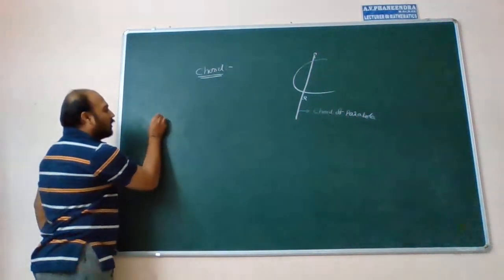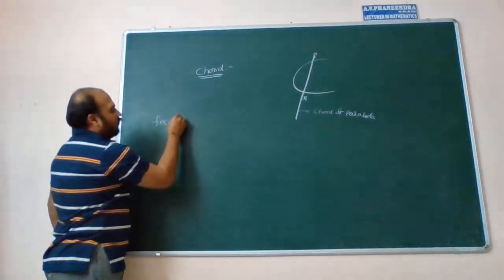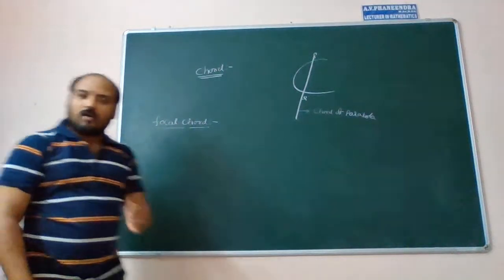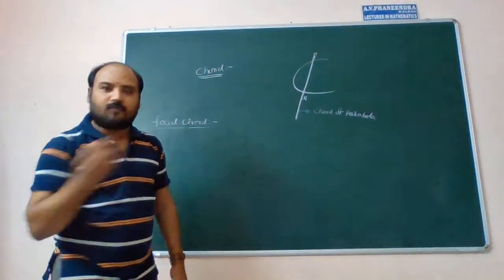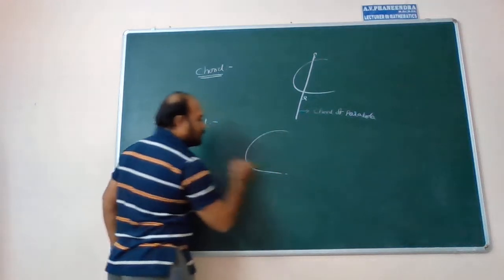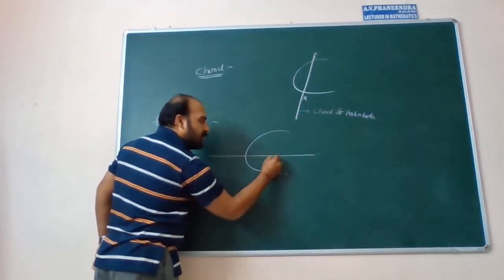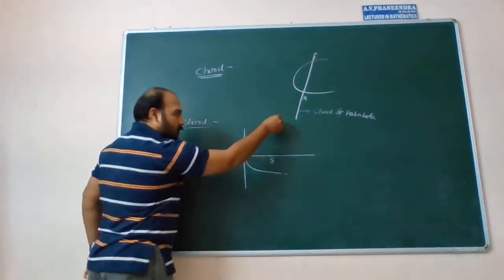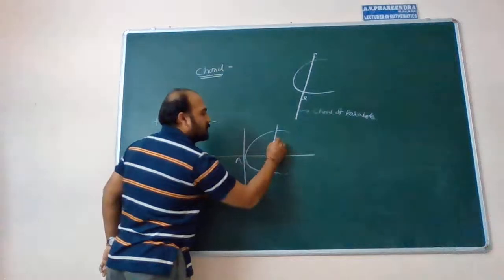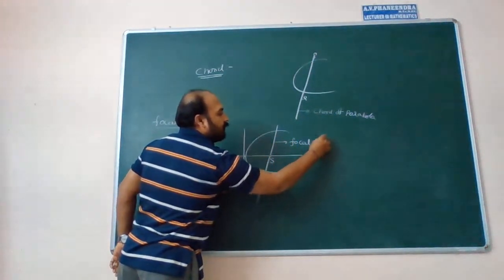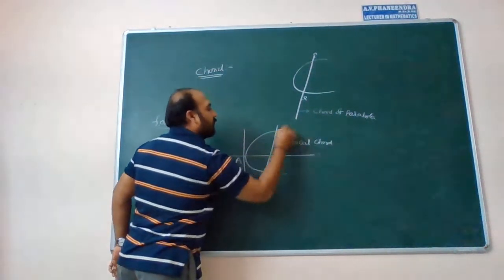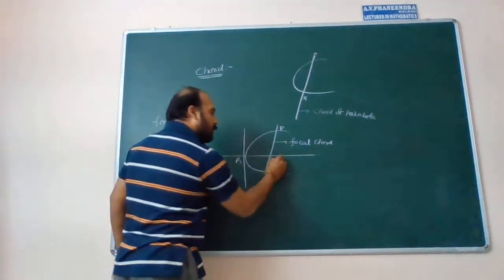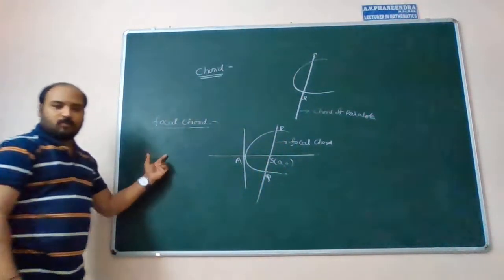After that, focal chord. What is the meaning of focal chord? The chord which is passing through the focus of the parabola is called focal chord. This is the y squared equal to 4x parabola. S is the focus, and A is the vertex of the parabola. The chord passing through the focus is called focal chord. P and Q are the ends of the focal chord. The focus is at (a, 0) for the parabola.